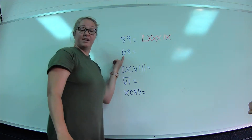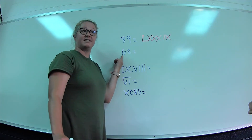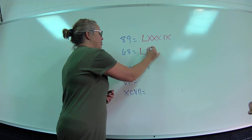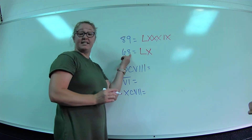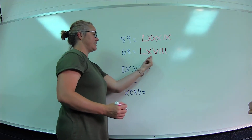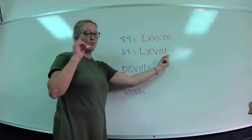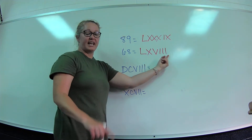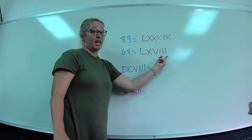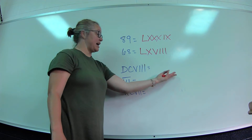See if you can beat me to this one — 68. Let's start with 60: that's 50 plus 10, so L-X. Now we need 8, which is 5 plus 1, 2, 3 — so V-I-I-I. That gives us 50, 60, 65, 66, 67, 68. If you break it down one step at a time and follow the steps, things go a lot smoother.